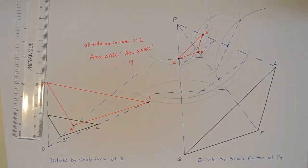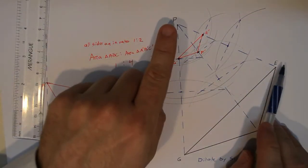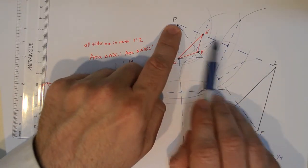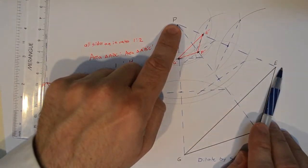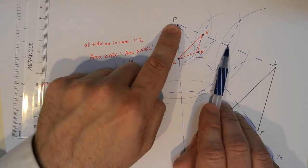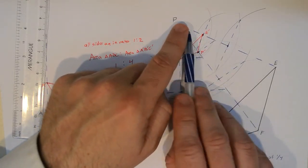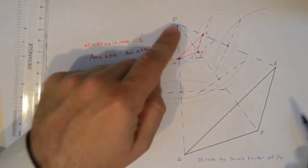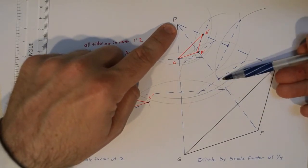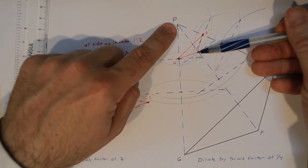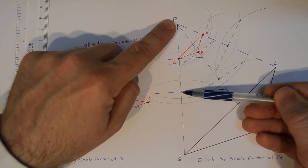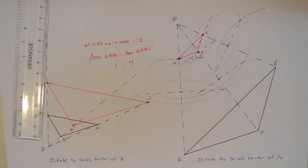To recap how this construction works: start with PE and find the perpendicular bisector - that's halfway. Then take the remaining segment and bisect it again - now we're at one quarter. Same with F: go to the midpoint, then bisect again to get the quarter. Same with G: bisect once to find the midpoint, then again to find the one-quarter mark.